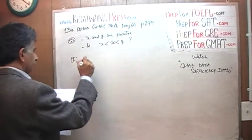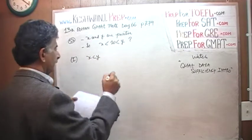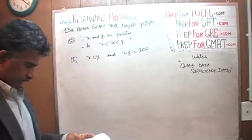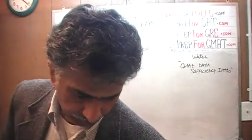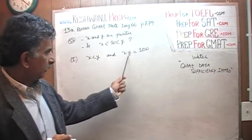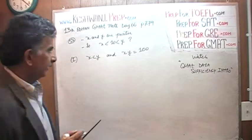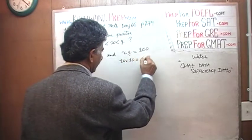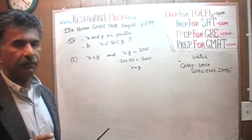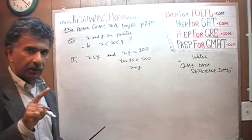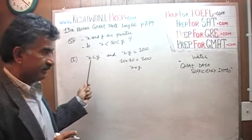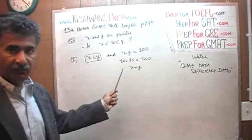The first statement tells us that X is less than Y, and they tell us that X times Y is 100. Now listen, here is what is going to go on. The only way the product of two numbers can be 100 is they are 10 times 10, in which case X would be equal to 100. I shouldn't say the only way, I am describing the whole scenario.